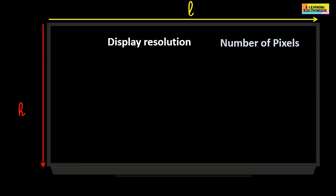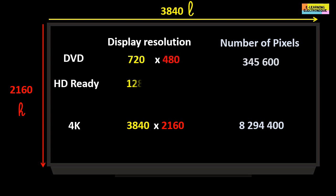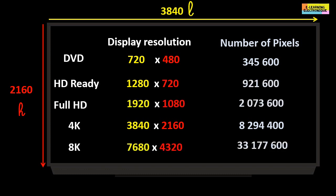For example, with a screen having 3840 pixels on its width and 2160 pixels on its height, the total number will be 8,294,400 pixels. This corresponds to a screen called 4K. This number of pixels will vary with the display resolution of the screen, as shown in a comparison table of different display resolution values depending on the model. Compared to a 4K screen, an 8K screen contains four times more pixels.